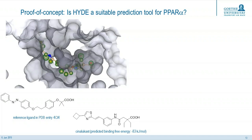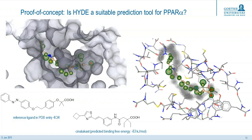Therefore, we first had a closer look at the proposed binding mode. We chose a crystal structure — we were quite lucky to find a crystal structure with a co-crystallized ligand which has high similarity to our lead structure. This is important because the quality of prediction improves with higher similarity. As you can see, Cine-Lukast already has a predicted binding affinity of minus 83 kilojoules per mole, which is already a very good value. We then had a closer look at the binding mode and looked for room for improvements. On the cyclobutylic tail end of Cine-Lukast, there is much room for improvement, and also on the central benzene ring where there is still unoccupied space.